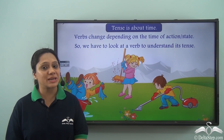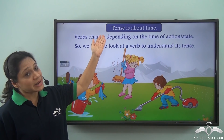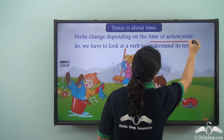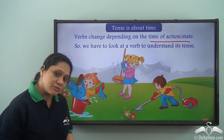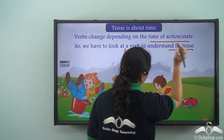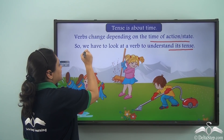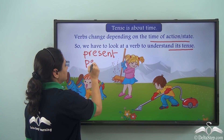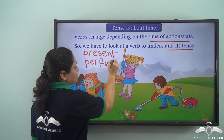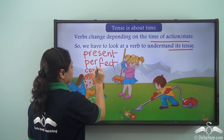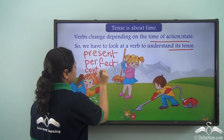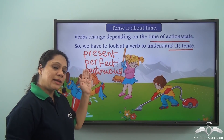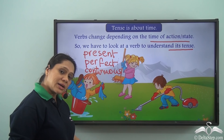You are familiar with the concept of tenses by now, and you know that tense is about time. Verbs change depending on the time of action or state. So we have to look at a verb to understand its tense. Today we will learn a little bit more about the present perfect continuous tense.